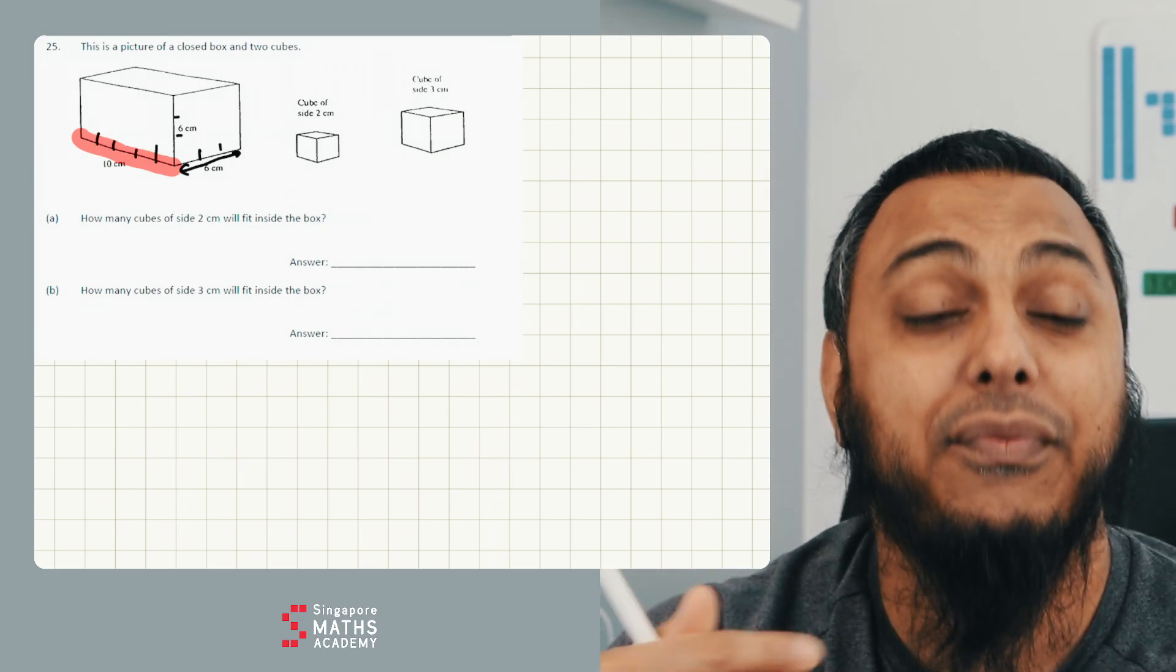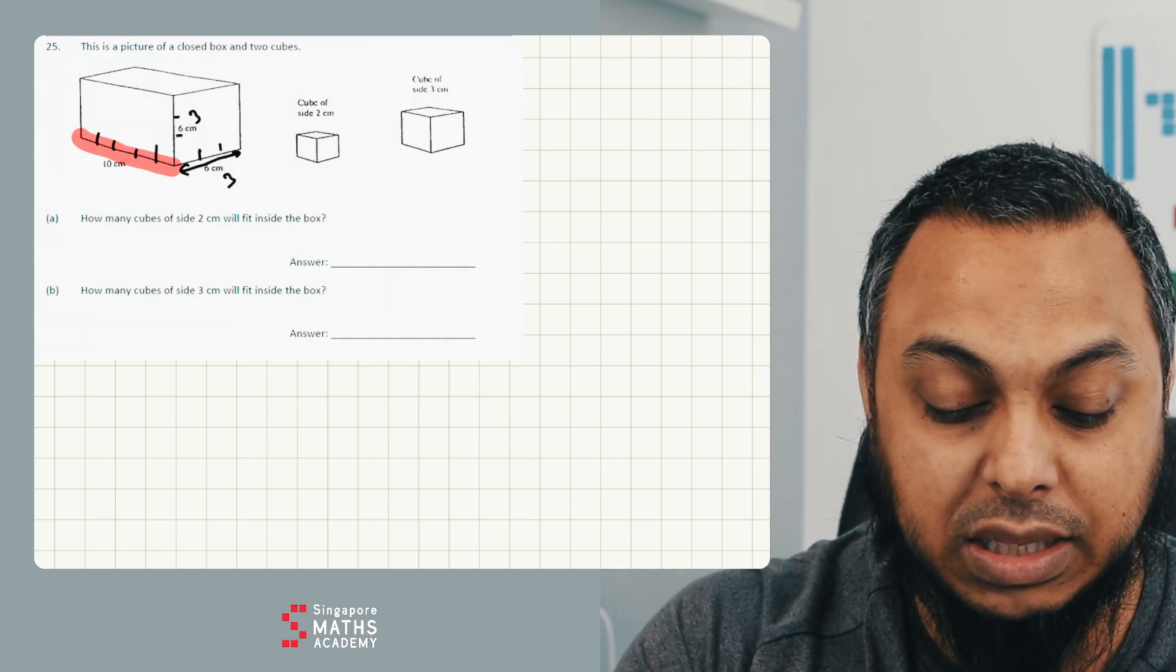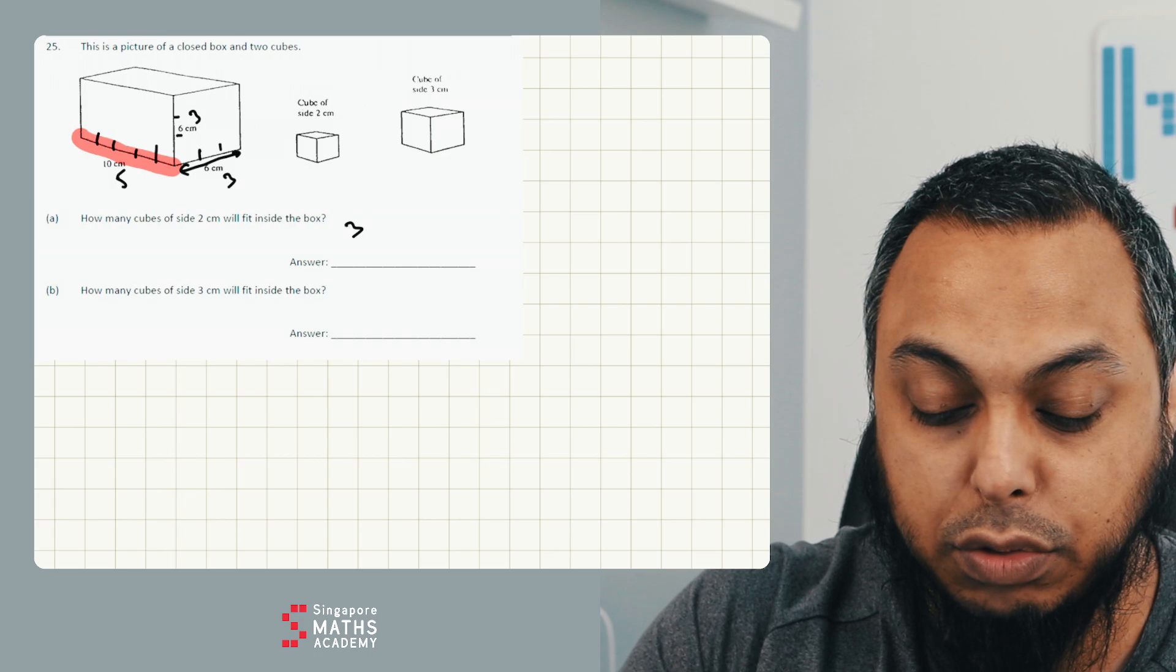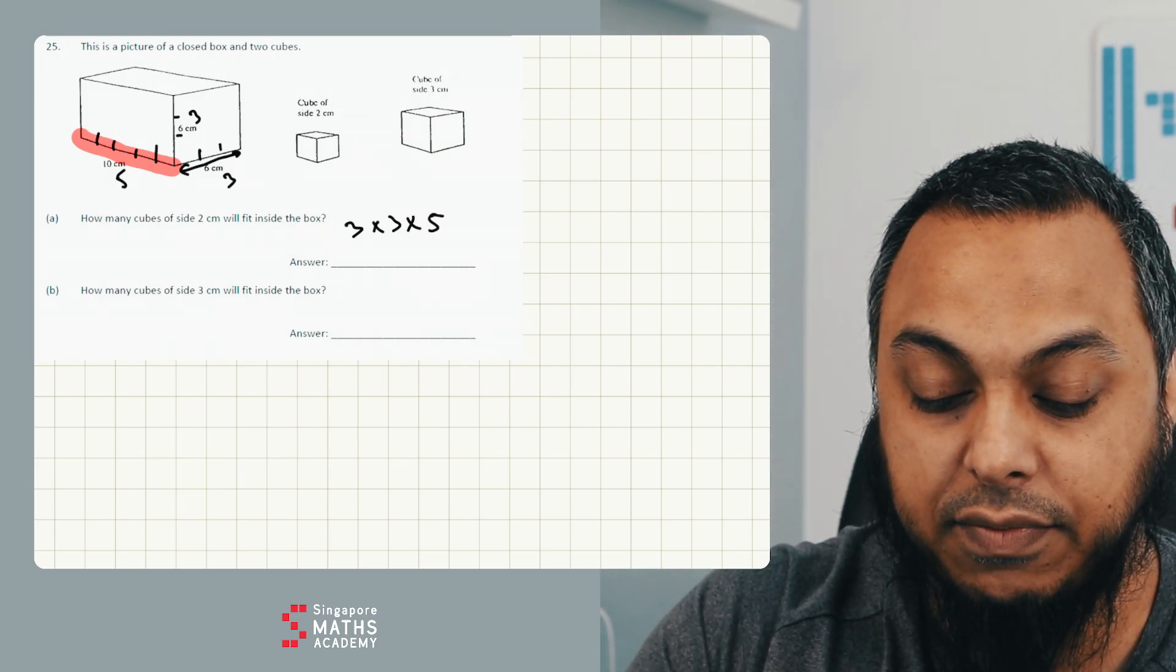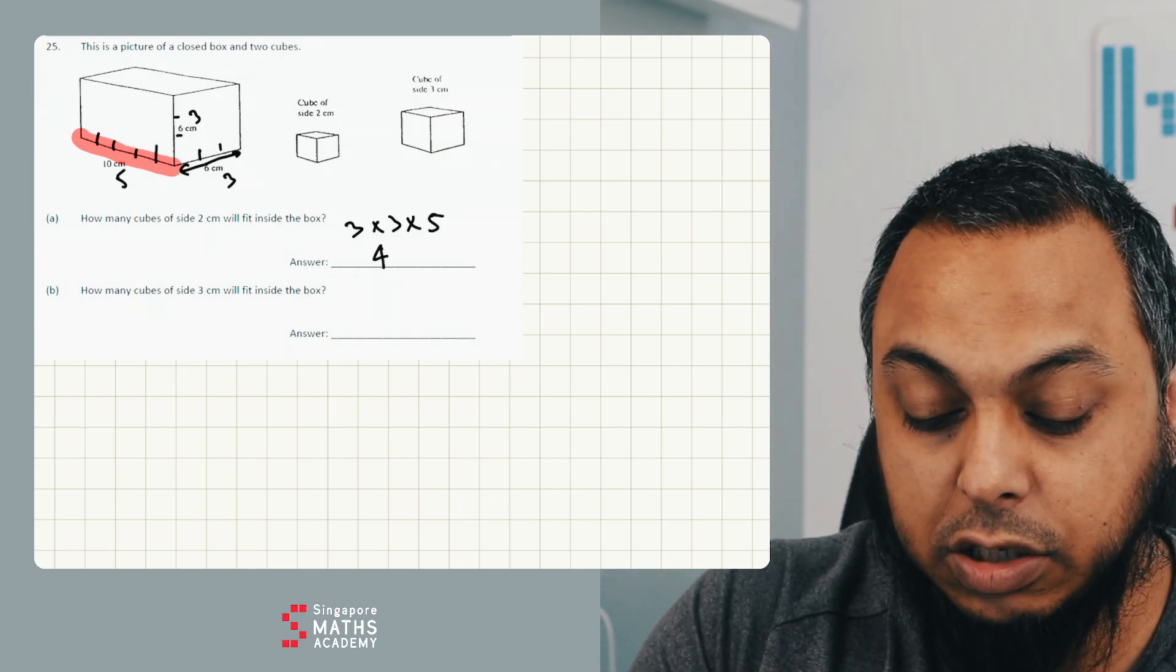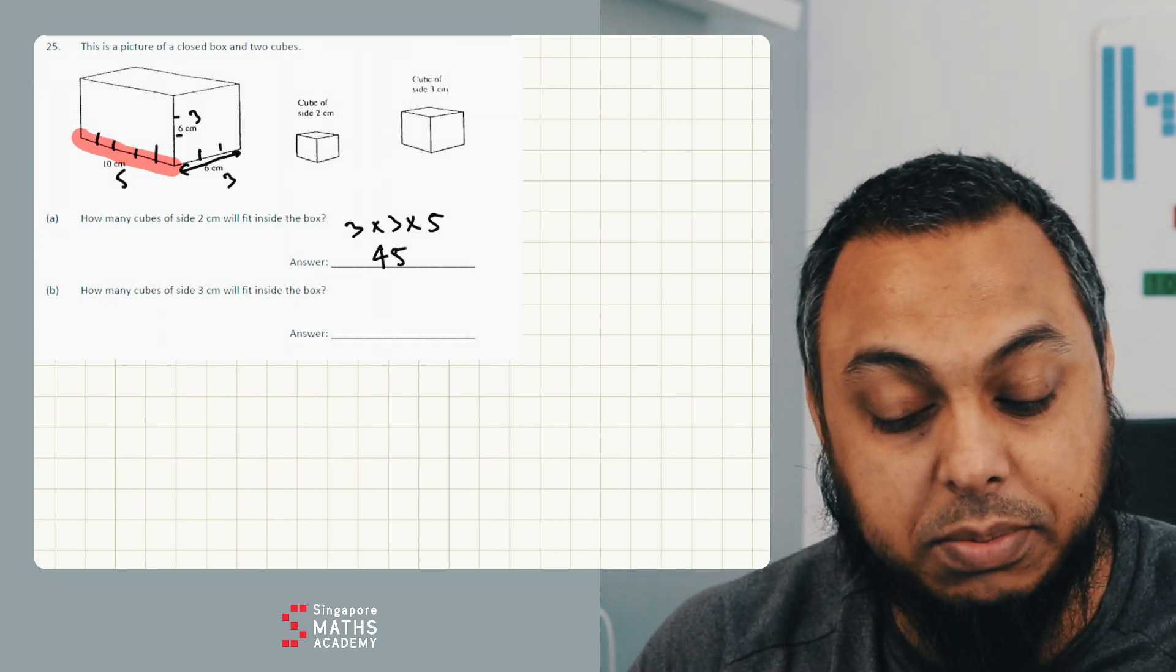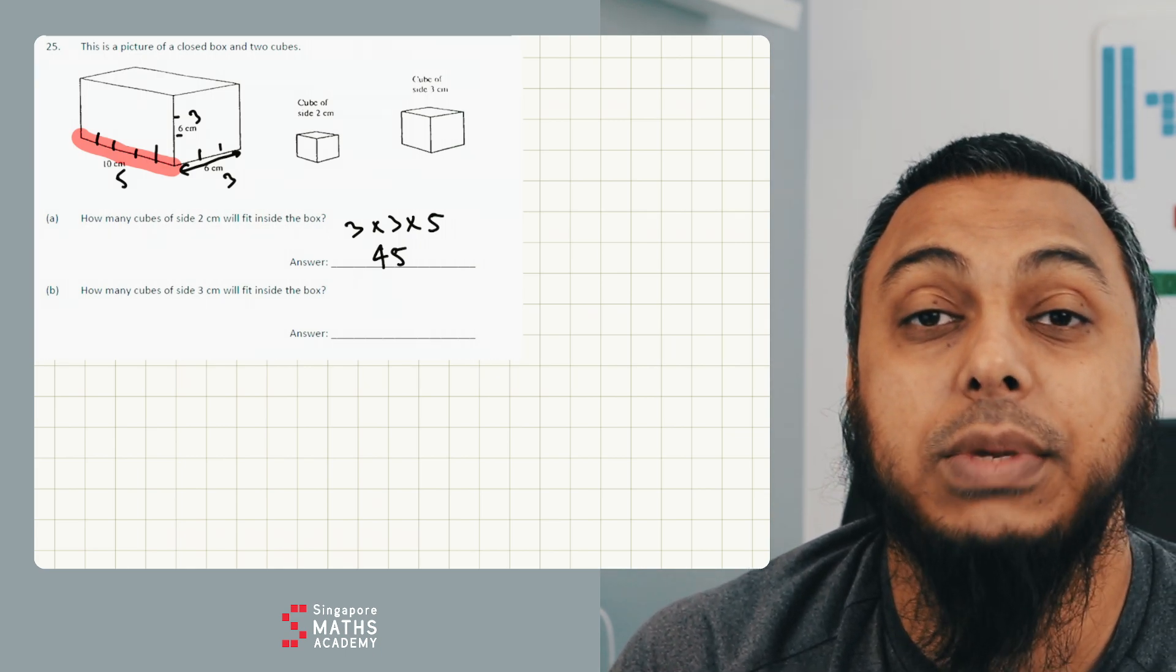And that means I can have five lots of three times three is nine. So I know it's three here, there's three there, and it's five there. So I could do three times three times five. Three times three is nine, nine times five is 45. And so I can have 45 of those two centimetre cubes.